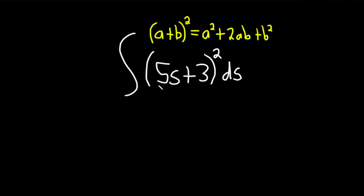So in this particular case this is our a and this is our b. So we have a squared which is going to be 5s squared, so that's going to be 25s squared because you square the 5 and you square the s.